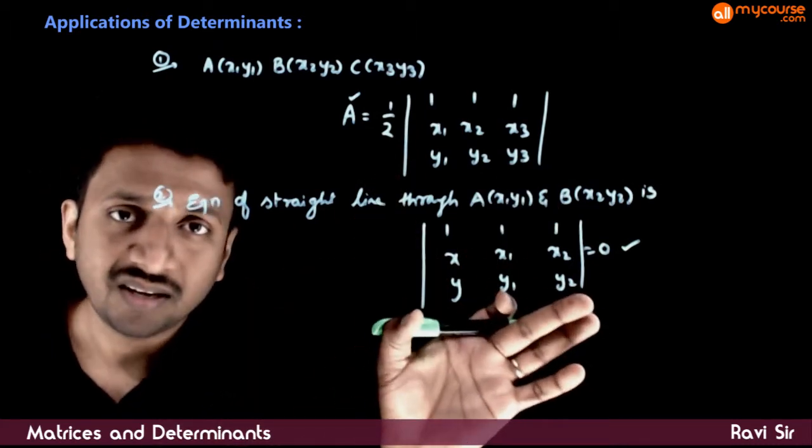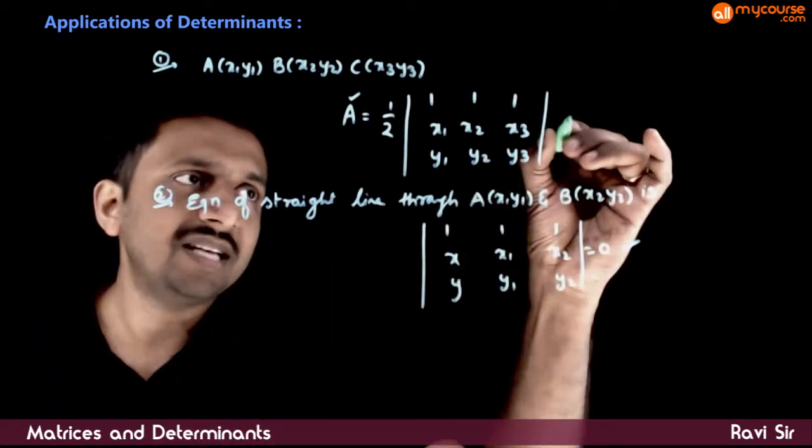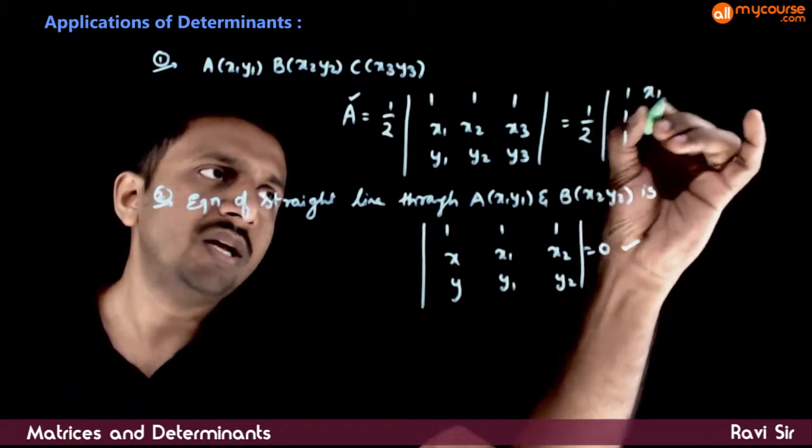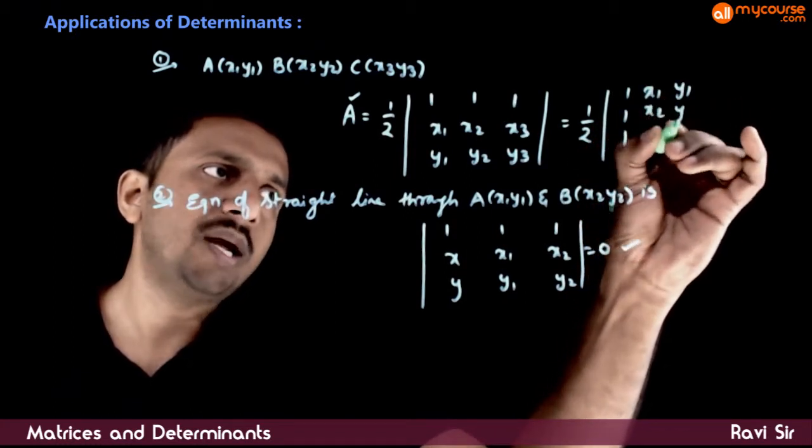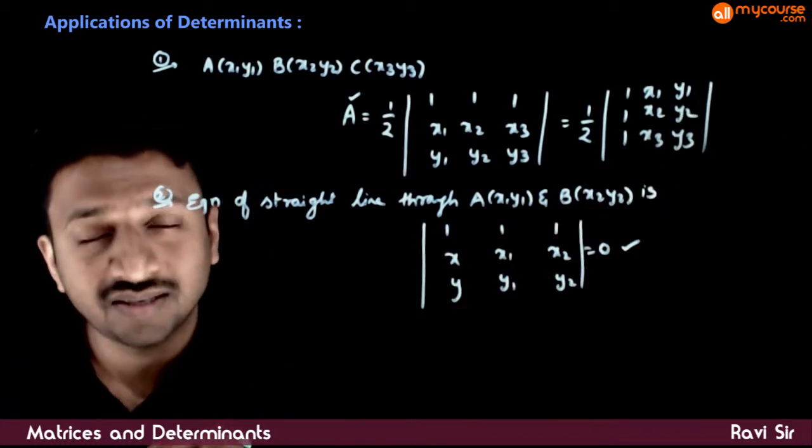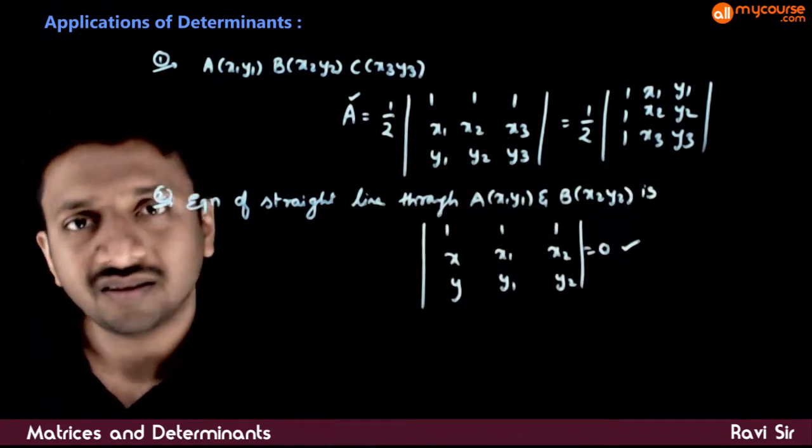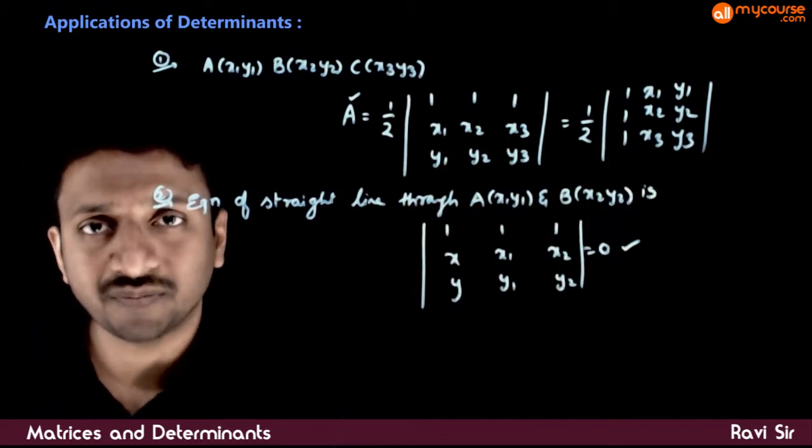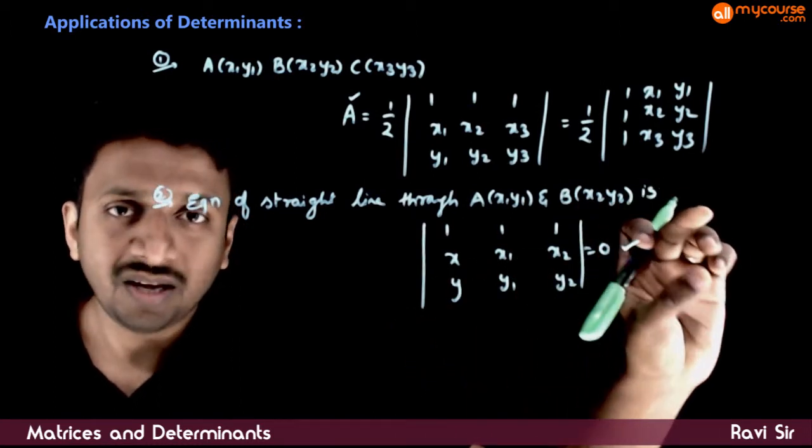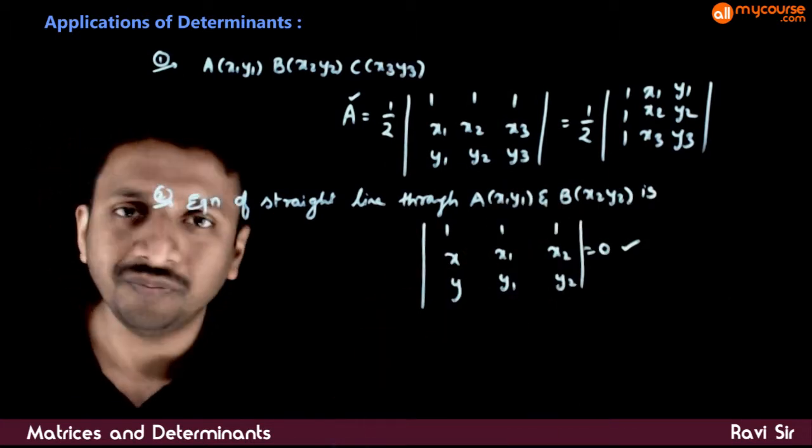Sometimes this determinant will be written in column form also. This is exactly equal to the determinant with columns (1,x,y), (1,x1,y1), and (1,x2,y2), because the determinant of a matrix is the same as the determinant of its transpose. So here you can do the same thing with columns.